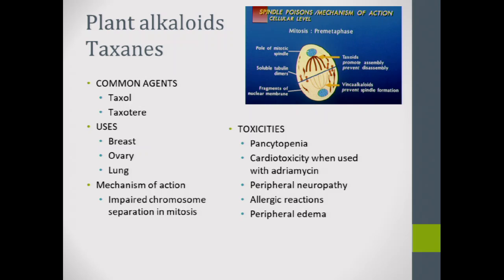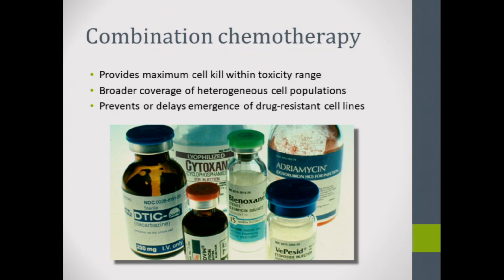Plant alkaloids like taxol interfere with mitosis by impairing the spindle microtubules. Combination chemotherapy is important because different mechanisms of action attack cells in different parts of the cell cycle, making treatment more effective and less likely to produce drug-resistant cell lines.